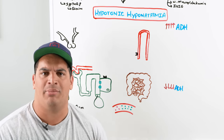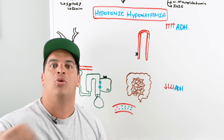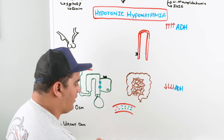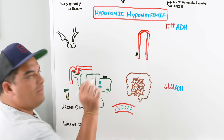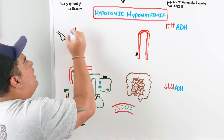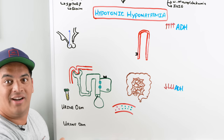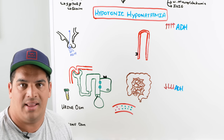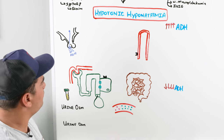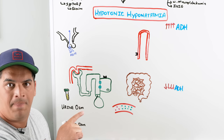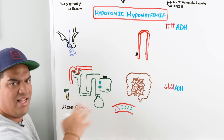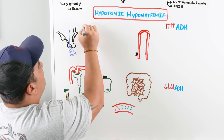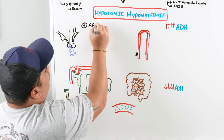ADH — also known as vasopressin — is produced by neurons in the hypothalamus extending down to the posterior pituitary. The key question is: what triggers ADH production? ADH goes down to the kidneys and produces important changes. The stimulatory factors of ADH are critical to understand, because if I know what's causing ADH to be produced, I know the causes of hyponatremia.